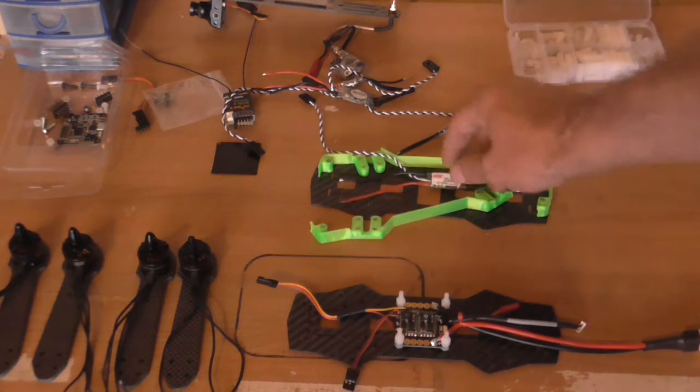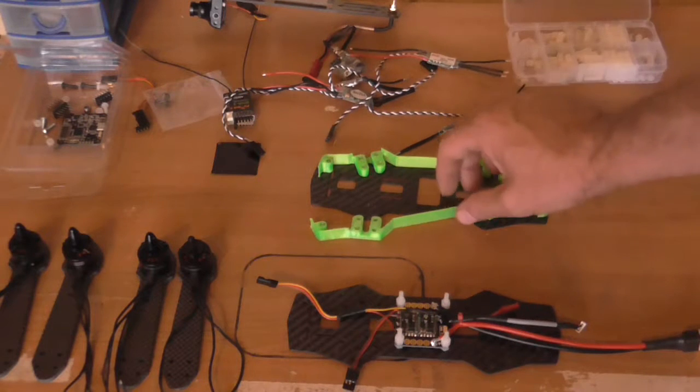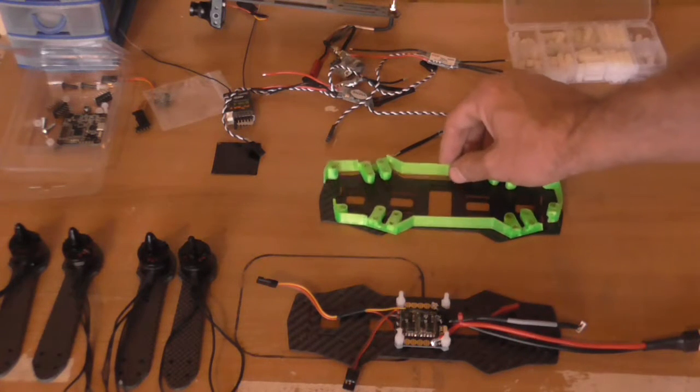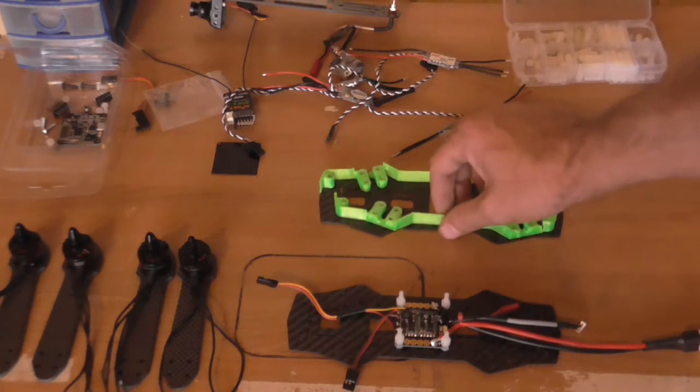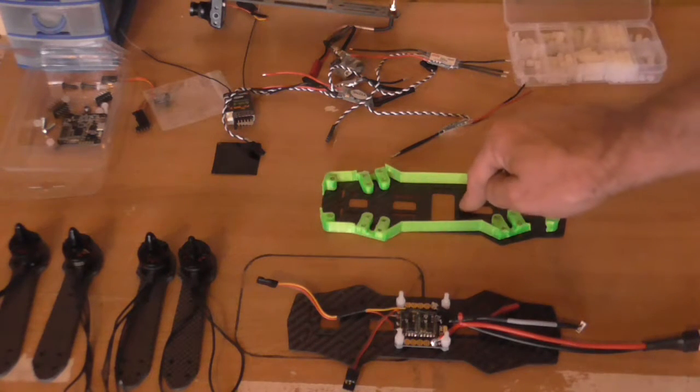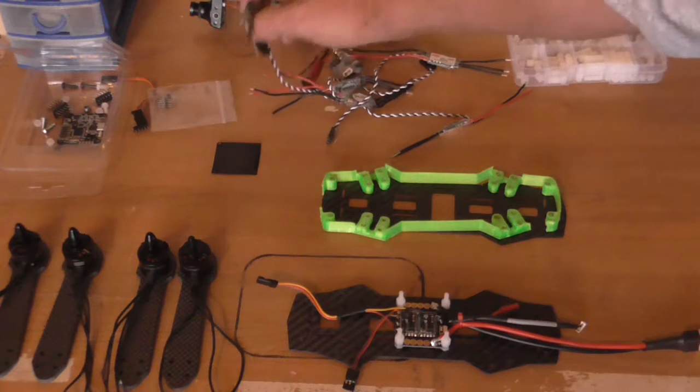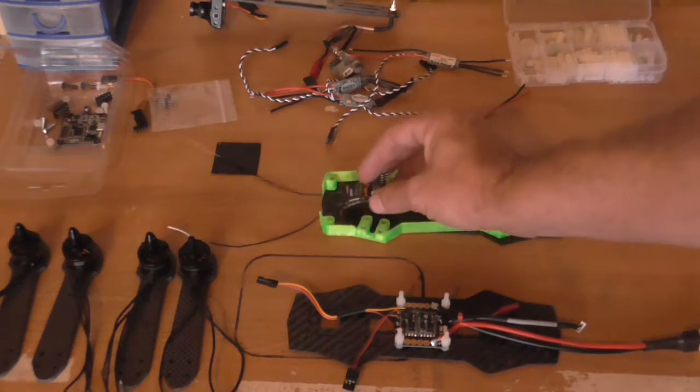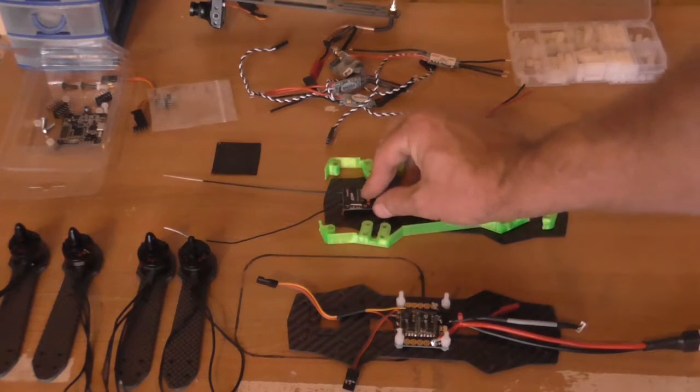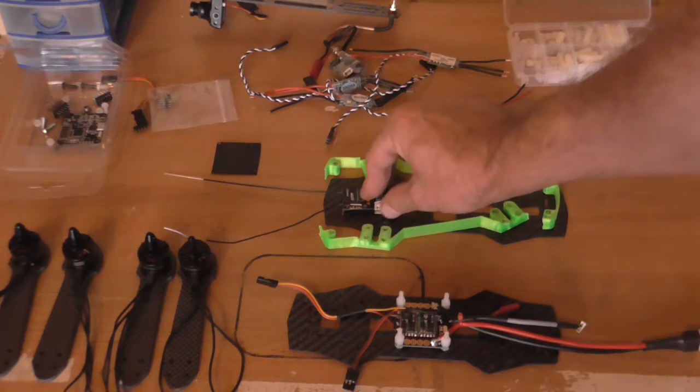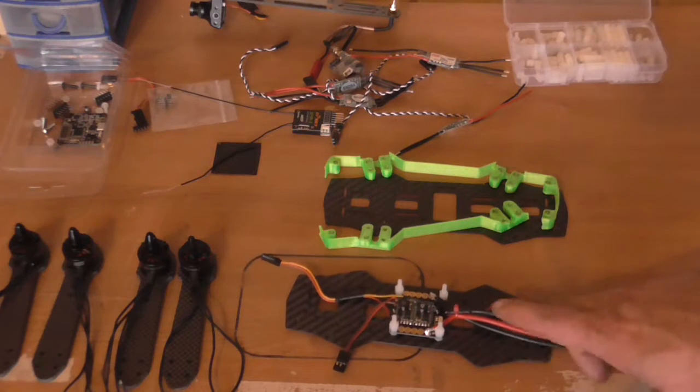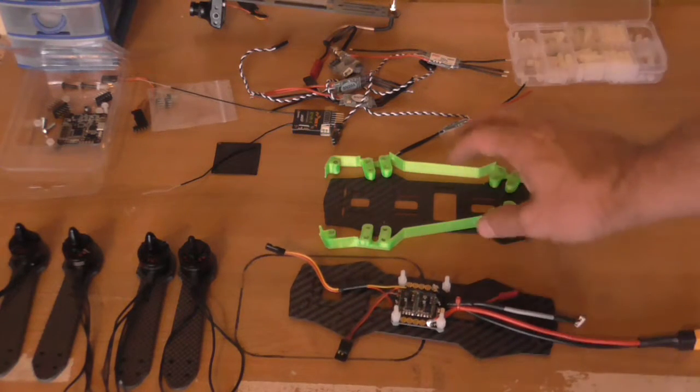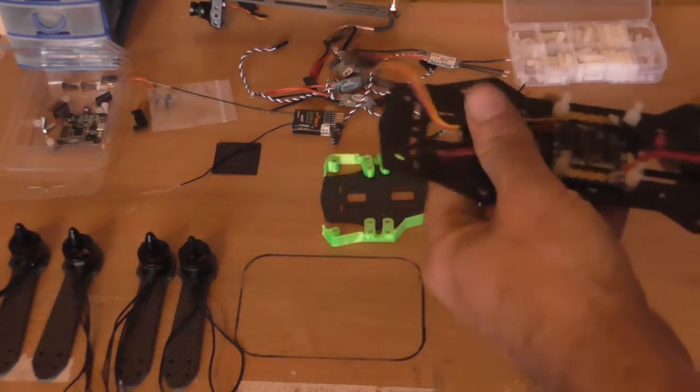The ESCs are going in there. This spacer, I like green, it looks pretty but it serves a purpose. I can get my ESCs in there and I'm going to put my transmitter in there as well, the radio receiver in there as well. So that's out of the way of the camera and it's out of the way of the video transmitter.